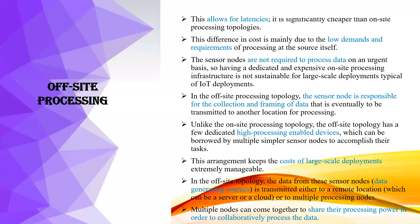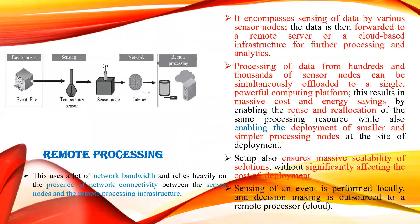In off-site topology, data from the sensor node is transmitted either to a remote location or to multiple processing nodes, which search for and process the data. Multiple nodes can come together to share their processing power collaboratively. This is why off-site processing is divided into collaborative and remote processing. In remote processing, data is sent remotely through the internet to a processor hub, which uses a lot of network bandwidth.